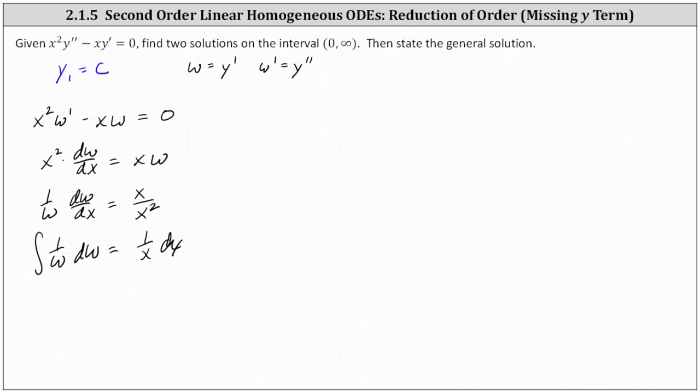And now we integrate both sides of the equation. Because we're solving over the open interval from zero to infinity, we can leave off the absolute values when integrating. The integral of one divided by w dw is natural log w equals on the right, we have natural log x plus a constant, which we'll call plus c sub one.